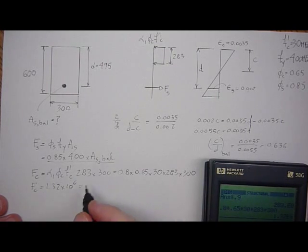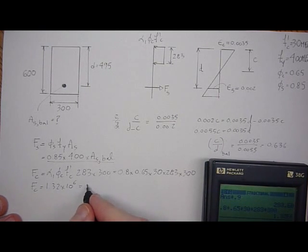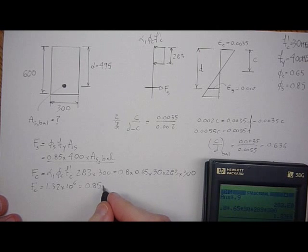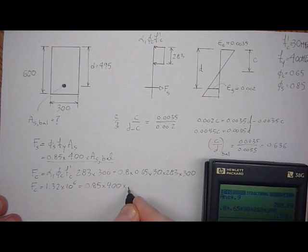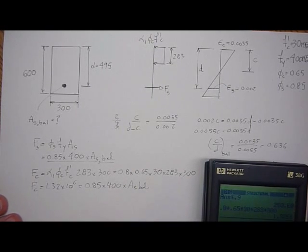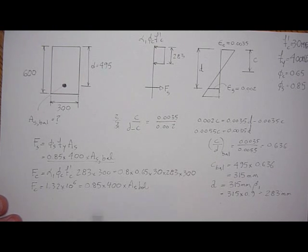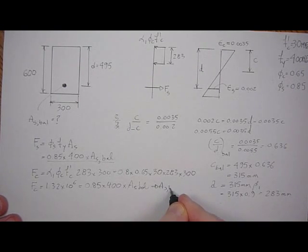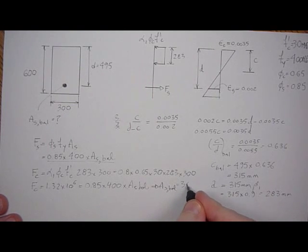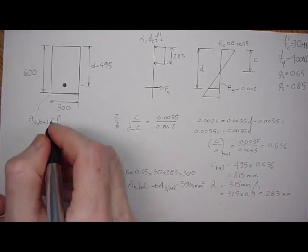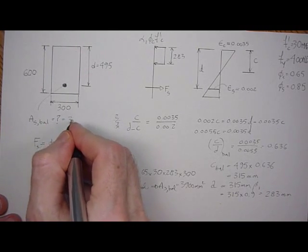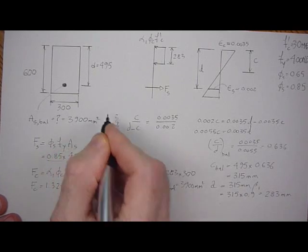The force in the steel has to equal this, and there's the force in the steel right there: 0.85 times 400 times AS balance. So we take that force in the concrete, 1.32, divided by 0.85 times 400, and we'll have the area of steel balance solved. So 3,900 millimeters squared. So the area of steel balanced is 3,900 millimeters squared. There you go, that solves the problem now.